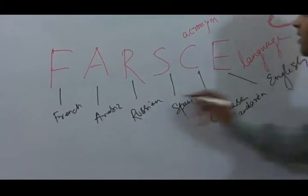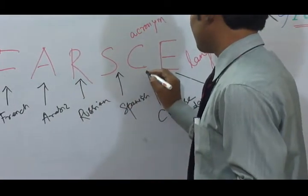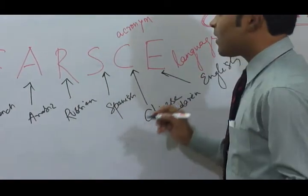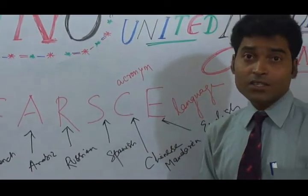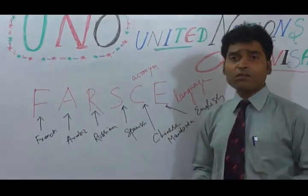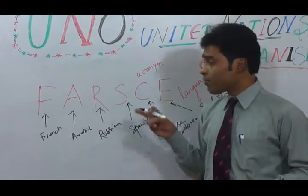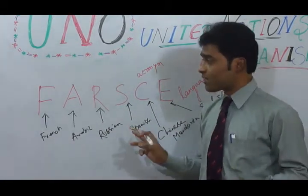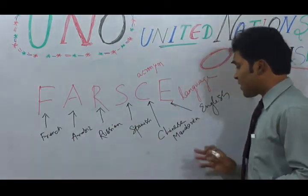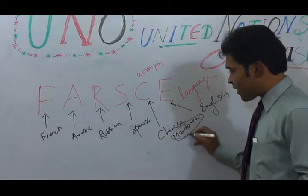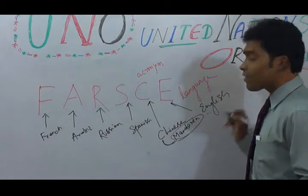Please remember this FARSCE — F-A-R-S-C-E. This acronym can help you memorize the official languages of the United Nations. There are also certain languages used in the International Court of Justice, which we will discuss later. For now, just remember FARSCE: French, Arabic, Russian, Spanish, Chinese Mandarin — it is officially mentioned as Mandarin — and English.